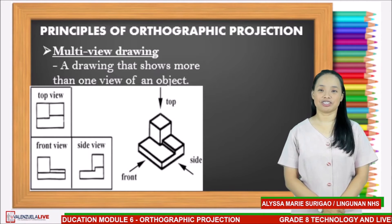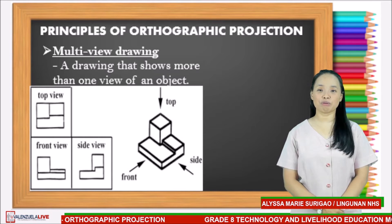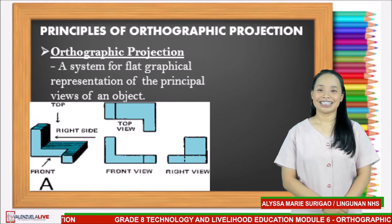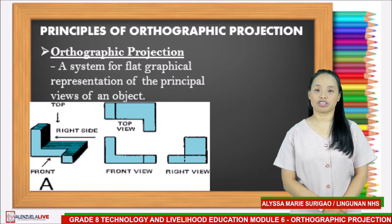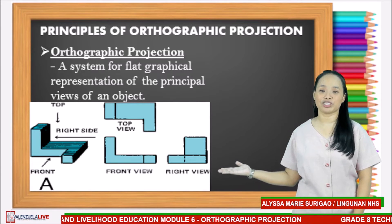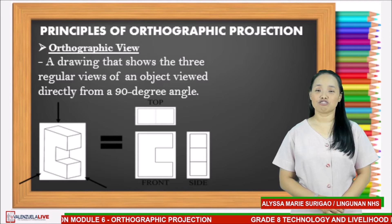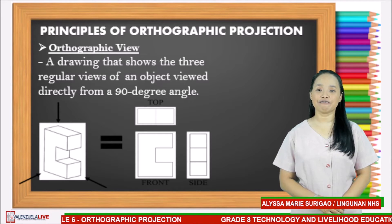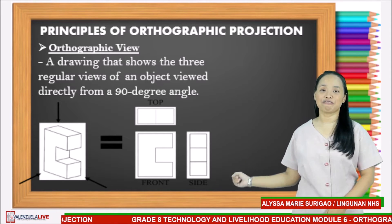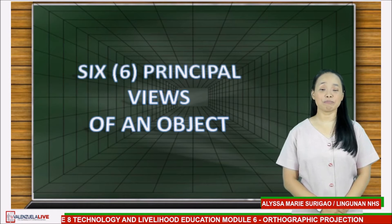Principles of orthographic projection: The first one is a multi-view drawing — a drawing that shows more than one view of an object, as you can see in the picture. The second one is orthographic projection — a system for flat graphical representation of the principal views of an object. The third one is the orthographic view — a drawing that shows the three regular views of an object viewed directly from a 90-degree angle. You can see the top, front, and right view.